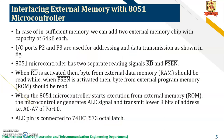In case of insufficient memory, we can add two external memory chips with capacity of 64 KB. Input and output ports P2 and P3 are used for addressing and data transmission. The microcontroller 8051 has two separate read signals: RD bar and PSEN bar. When RD bar is activated, a byte from external data memory (RAM) is read, while when PSEN bar is activated, a byte from external program memory (ROM) is read. When the 8051 starts execution from external ROM memory, the microcontroller generates the ALE signal (address latch enable) and transmits the lower 8-bit address A0 to A7 on port 0. The higher address A8 to A15 is connected to port 2, and a single ALE pin is connected to the octal latch 74HCT573.